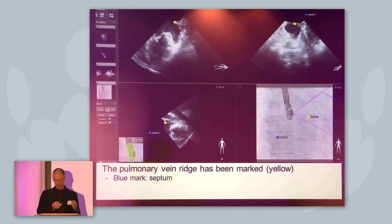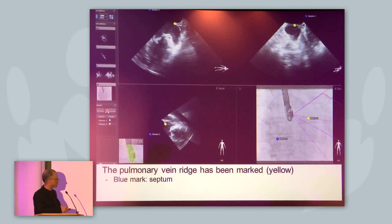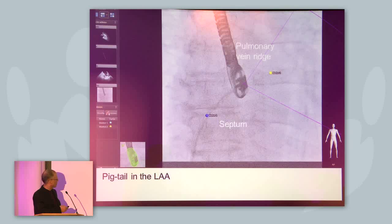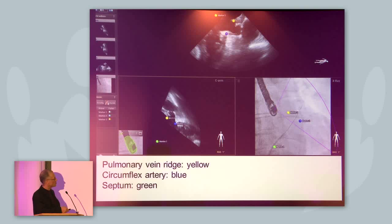When you look at the left atrial appendage, here is a yellow mark placed at the pulmonary ridge. You can see this yellow mark on fluoro, and you know that with your pigtail catheter or whatever catheter you want to use to engage the appendage, you have to be below this yellow mark. So here the pigtail is now in the left atrial appendage below the yellow mark, because that's the pulmonary vein ridge. This is the mark for the pulmonary vein ridge, this is the mark for the circumflex artery, and the pigtail catheter is in between — so you can confirm on screen before giving contrast that you are in the left atrial appendage.